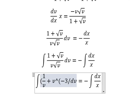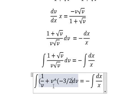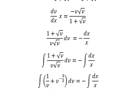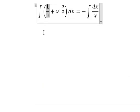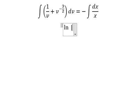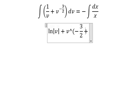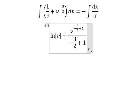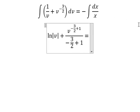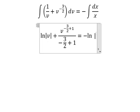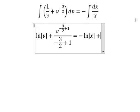We integrate with v to the negative 3/2. The integration gives us the natural log of the absolute value of v, and on the other side, negative natural log of the absolute value of x, plus C.